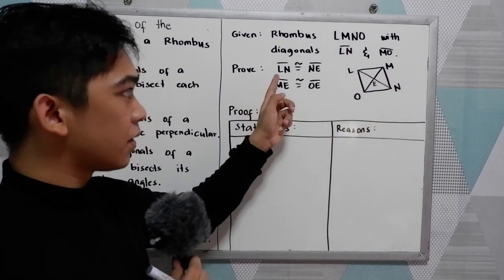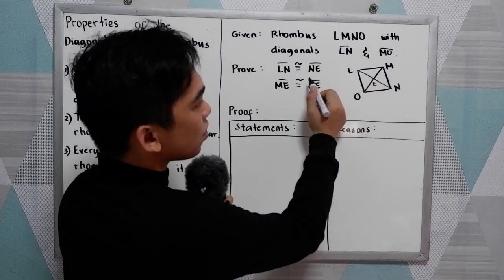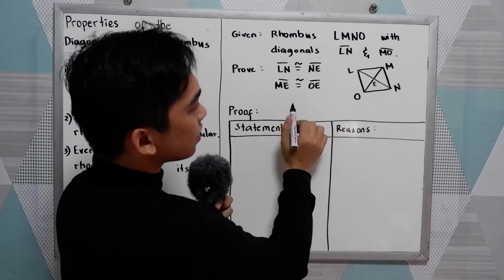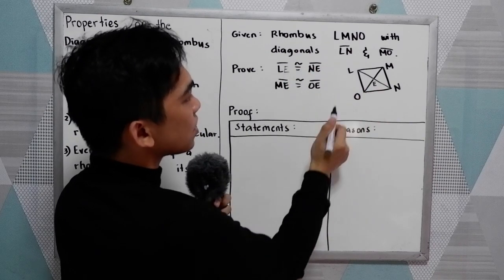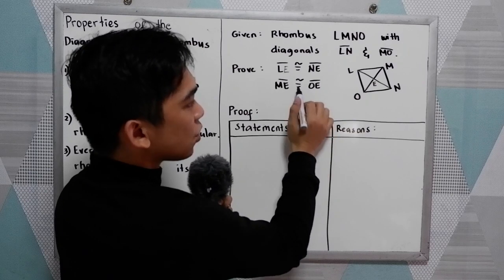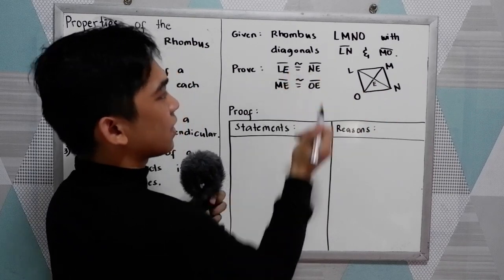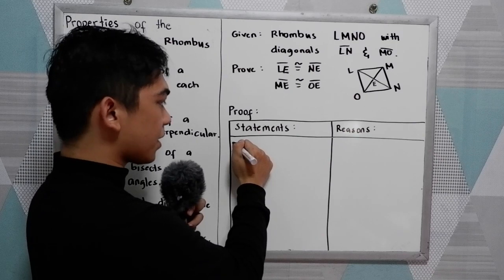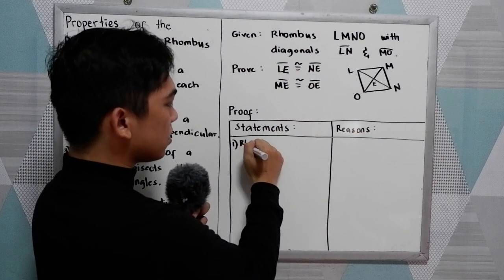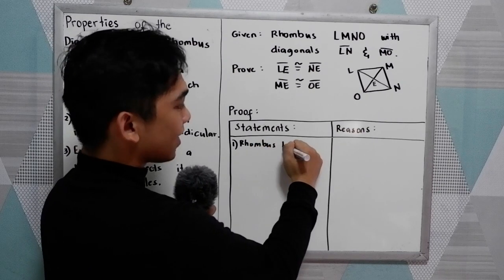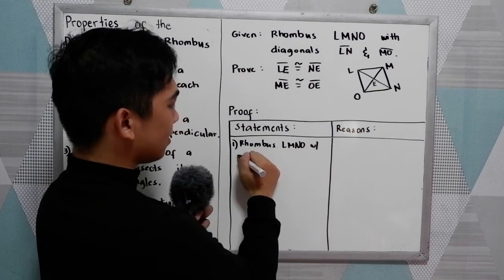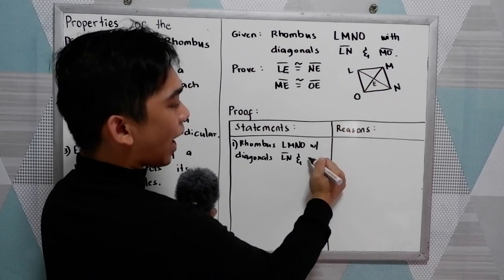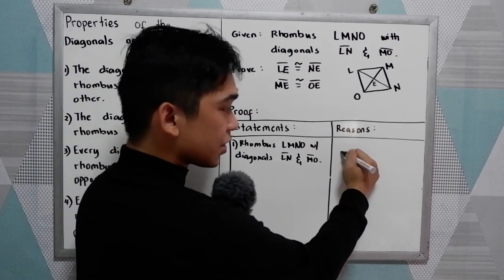Prove: LE is congruent to NE, and ME is congruent to OE, where E is the intersection point. To write this proof, we write all the given first as our statement and reason. So we have rhombus LMNO with diagonals LN and MO. The reason is: given.